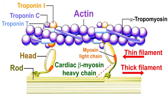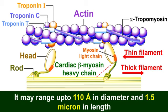A band contains a set of thick filaments formed of the contractile protein myosin. It may range up to 110 angstrom in diameter and 1.5 micron in length.